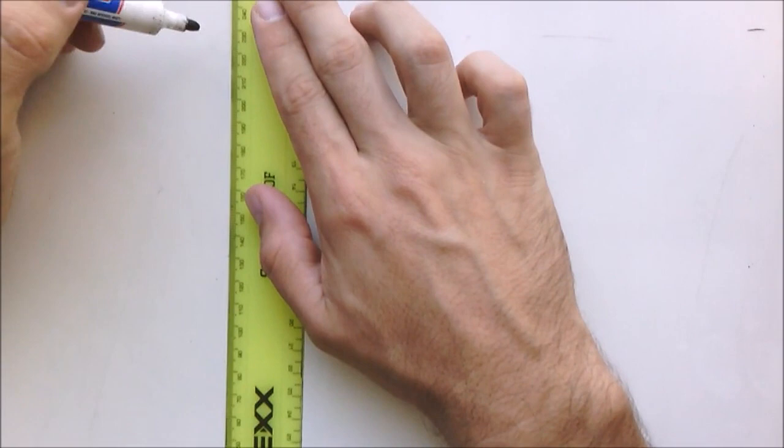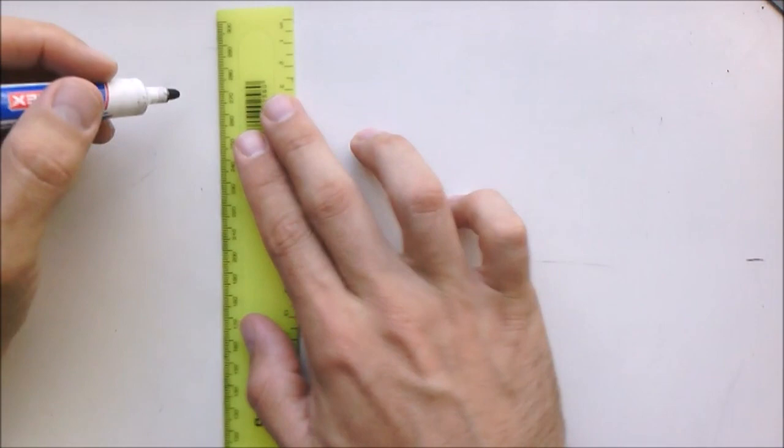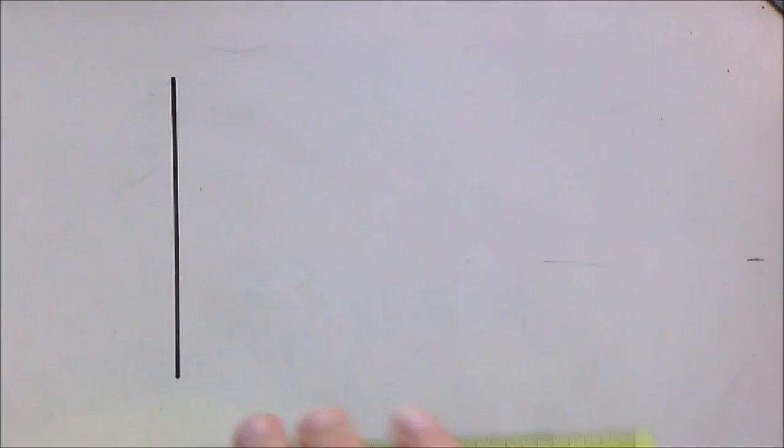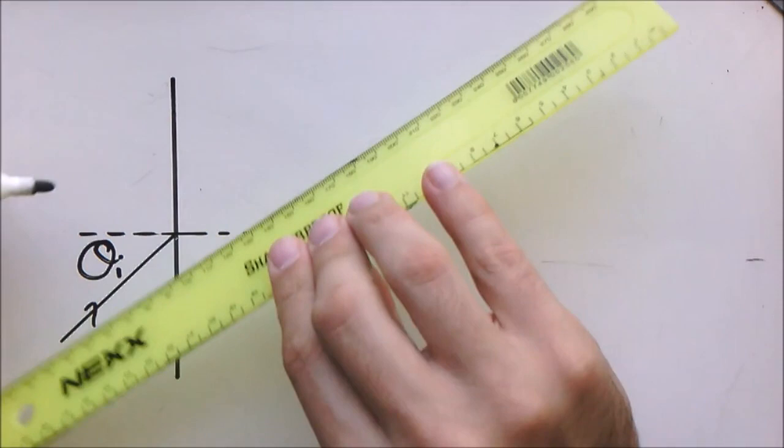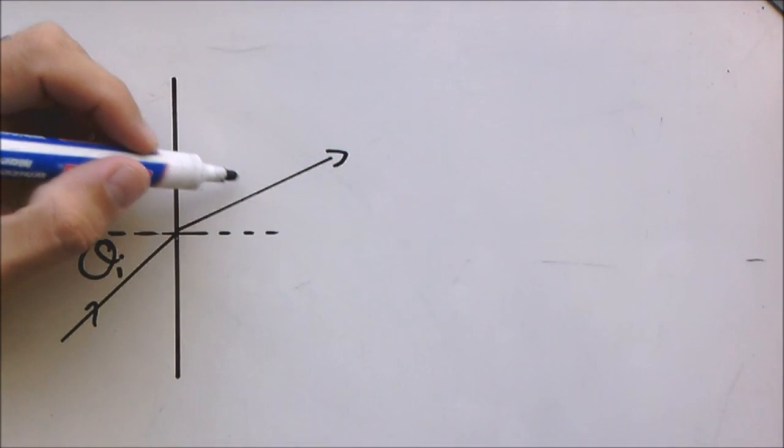It gives us a relationship between two different mediums and the refractive indices. So here's the boundary, here's the normal, and here is your incident ray with the angle of incidence.